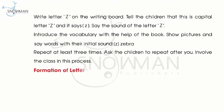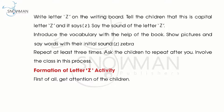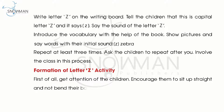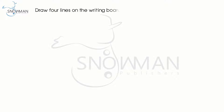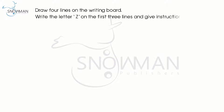Formation of letter Z activity: first of all, get the attention of the children. Encourage them to sit up straight and not bend their backs. Draw four lines on the writing board, write the letter Z on the first three lines, and give instructions.